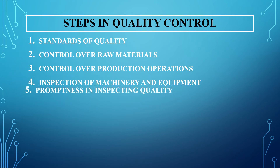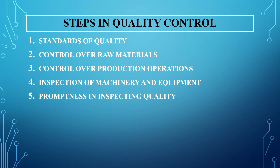The fifth step in quality control is promptness in inspecting quality. Whenever you are inspecting the quality, it should be done promptly and regularly — it should not be ignored. In a prompt inspection, the responsibility for low quality can be immediately fixed. When you are thoroughly checking each and every item, whenever you find a low quality or defective item, you can always take corrective action. This will help in controlling further production and enables corrective measures.